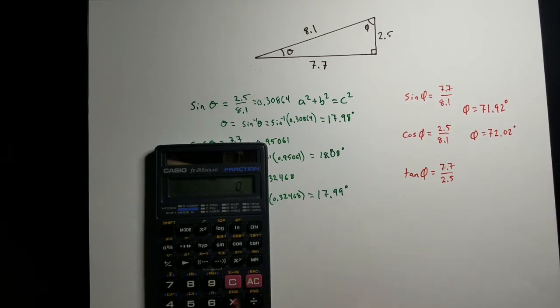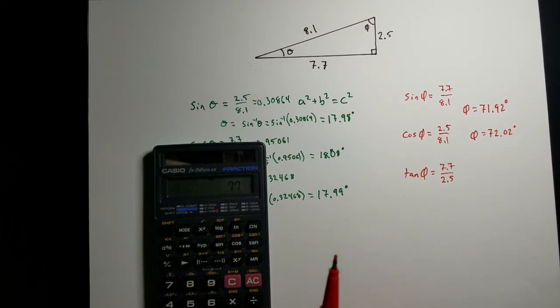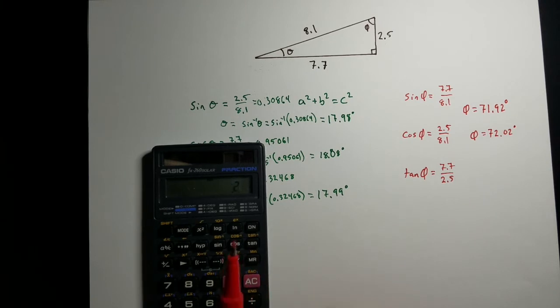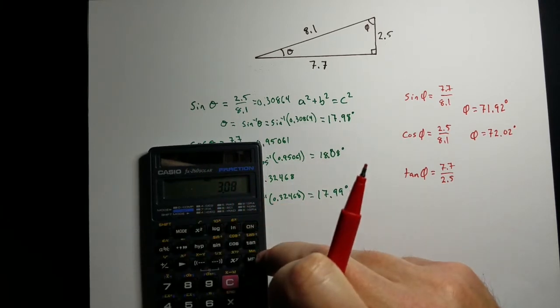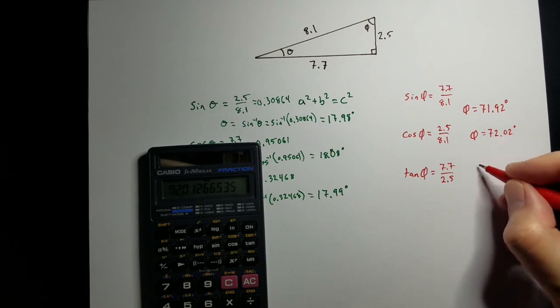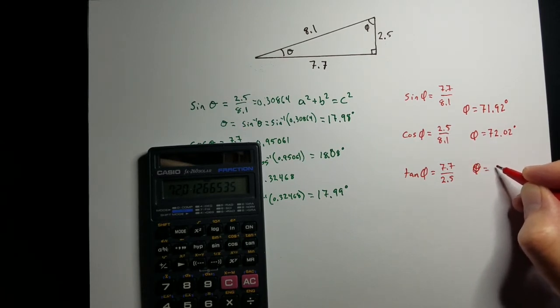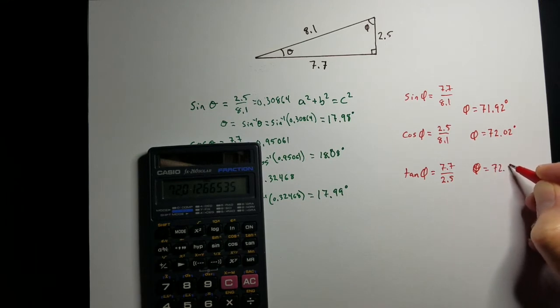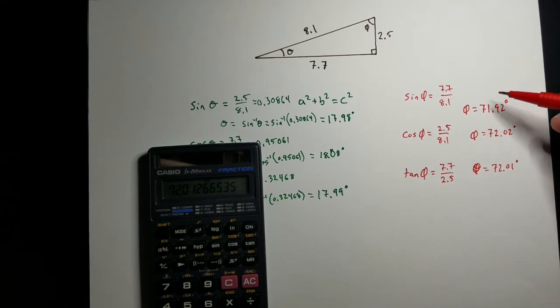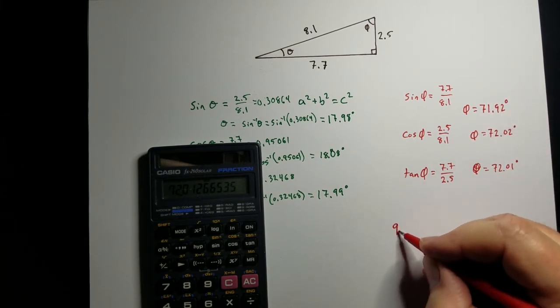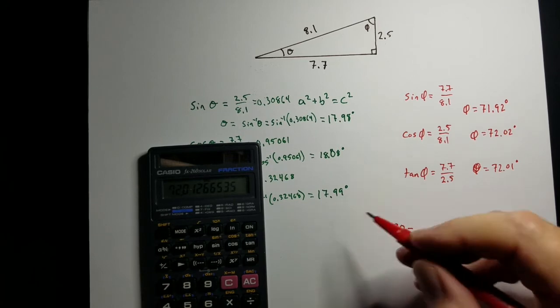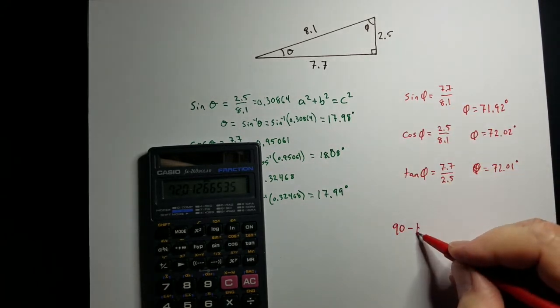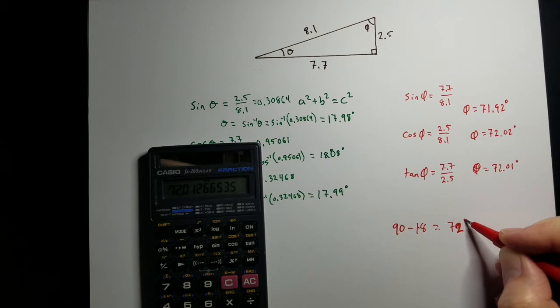And for tangent, 7.7 divide by 2.5, shift tangent, equals 72.01 degrees. So all very close together, all right around 72, which it should be because 90 minus this is all around 18, should be 72 degrees.